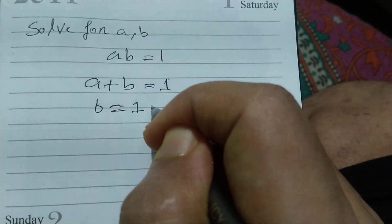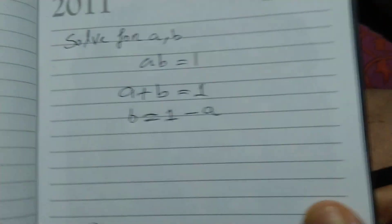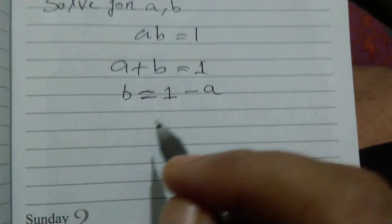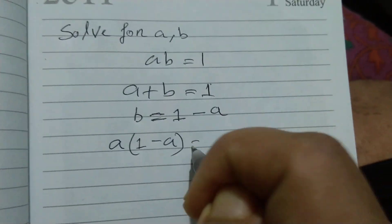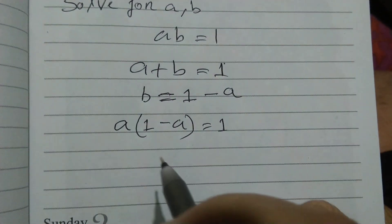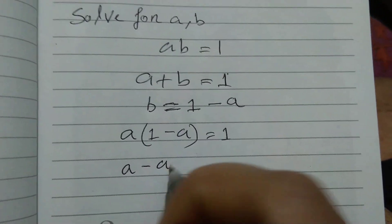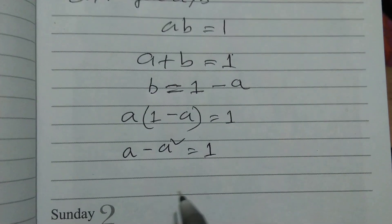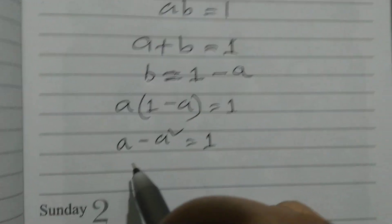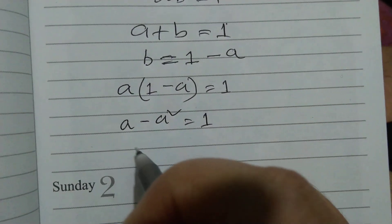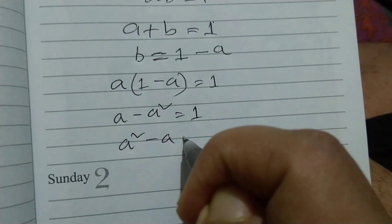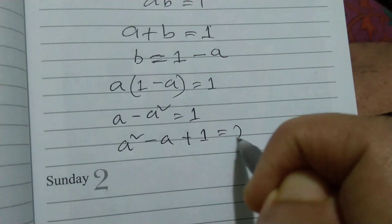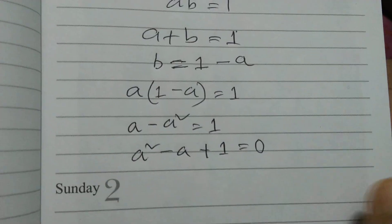So I can write b = 1 - a. Now I am putting this value in here: a(1 - a) = 1, which gives a - a² = 1. This can be rewritten as a² - a + 1 = 0.